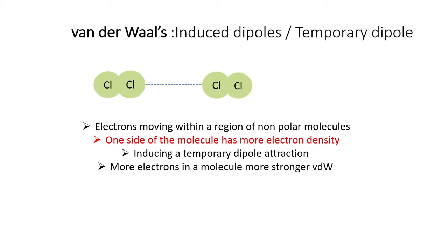For example, in this chlorine molecule, electrons are constantly moving around the atom. However, at a certain point in time, one atom or one side of the molecule has more electron density. This part of the molecule becomes negatively charged and is indicated as delta negative, while the opposite side of the molecule has positive charges indicated by delta positive. Similar situations occur in neighbouring molecules, and the attractive forces between neighbouring molecules are called Van der Waals forces.